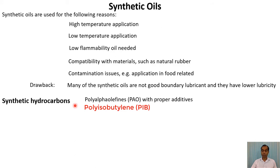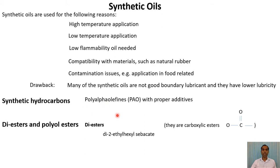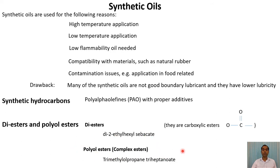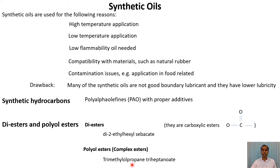There is another synthetic hydrocarbon known as polyisobutylen, used as a metal working fluid. The next category of synthetic oils is esters — diesters and polyol esters. Diesters have a carboxylic ester group in their molecule; a very common example is di-2-ethylhexyl sebacate. Polyol esters are complex esters. These ester molecules are very high temperature materials used for aircraft applications, hot metal processing such as continuous casting. In general, esters are oxidation resistant and have very good lubricity. Fatty acid esters are another example.